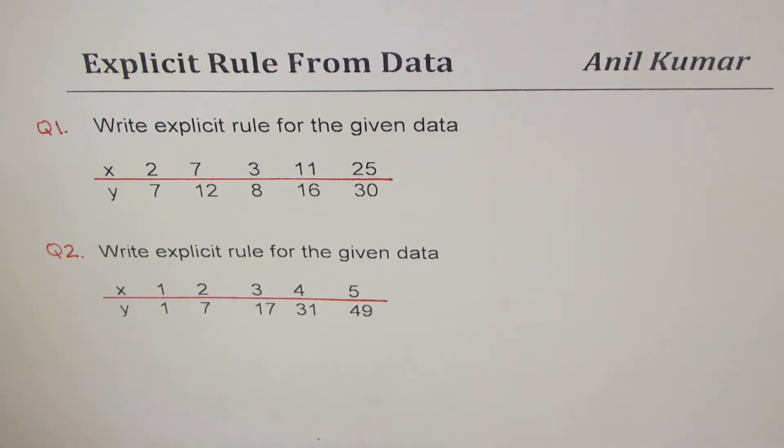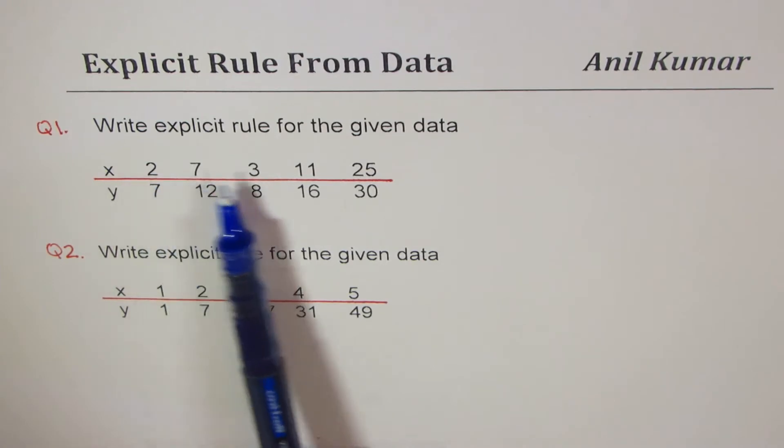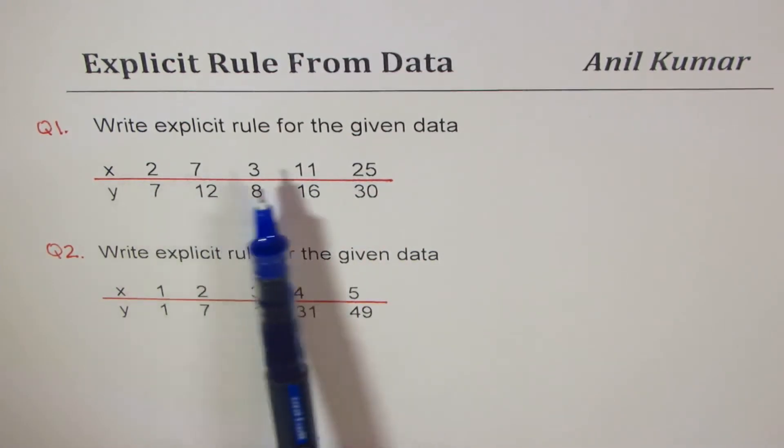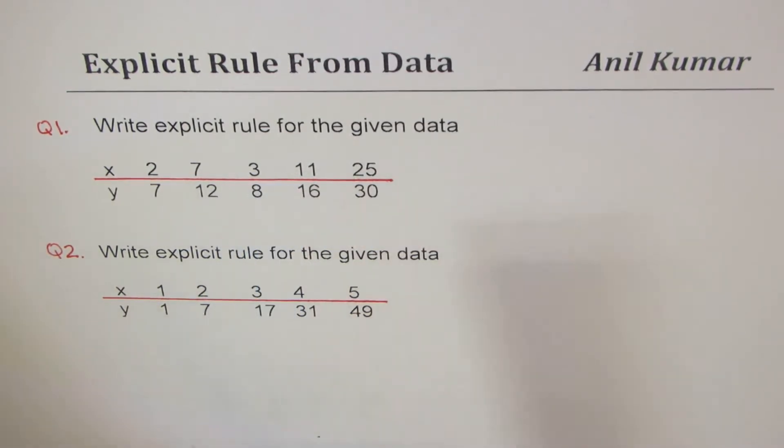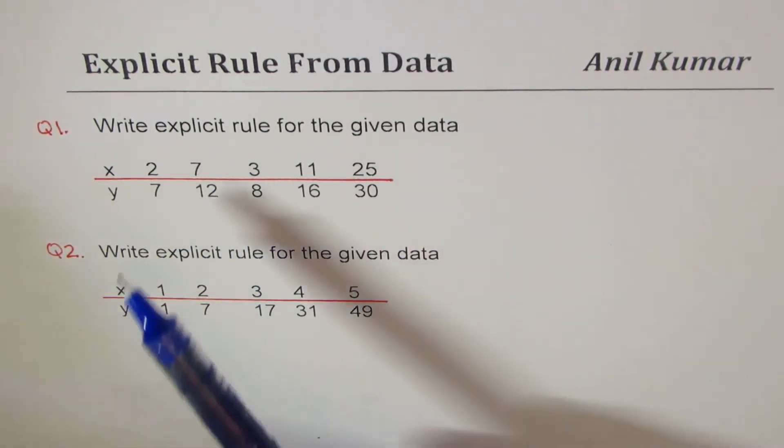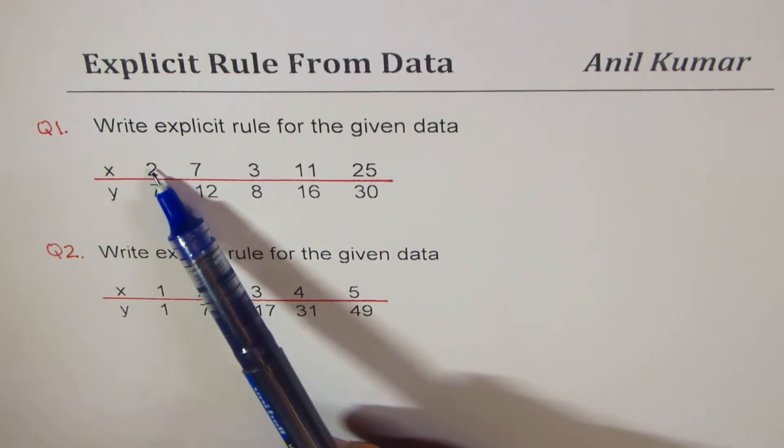Now in question number one, you will see that there are a lot of missing values and they are not arranged properly. However, if you carefully observe, for the x value of 2, y is 7.